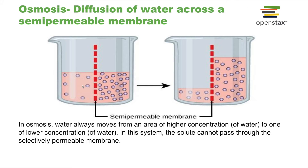If you look here and compare the two sides, the concentration of water is much higher on the left-hand side than it is on the right-hand side. On the right-hand side, we have a lot of solute molecules. So if the solute molecules cannot pass through this membrane, then how is this system going to reach equilibrium? Over time, you go from the left-hand situation to equilibrium on the right, where the concentration of water and solute are equal across the semipermeable membrane. Water goes from the left-hand side down its concentration gradient to the right-hand side.